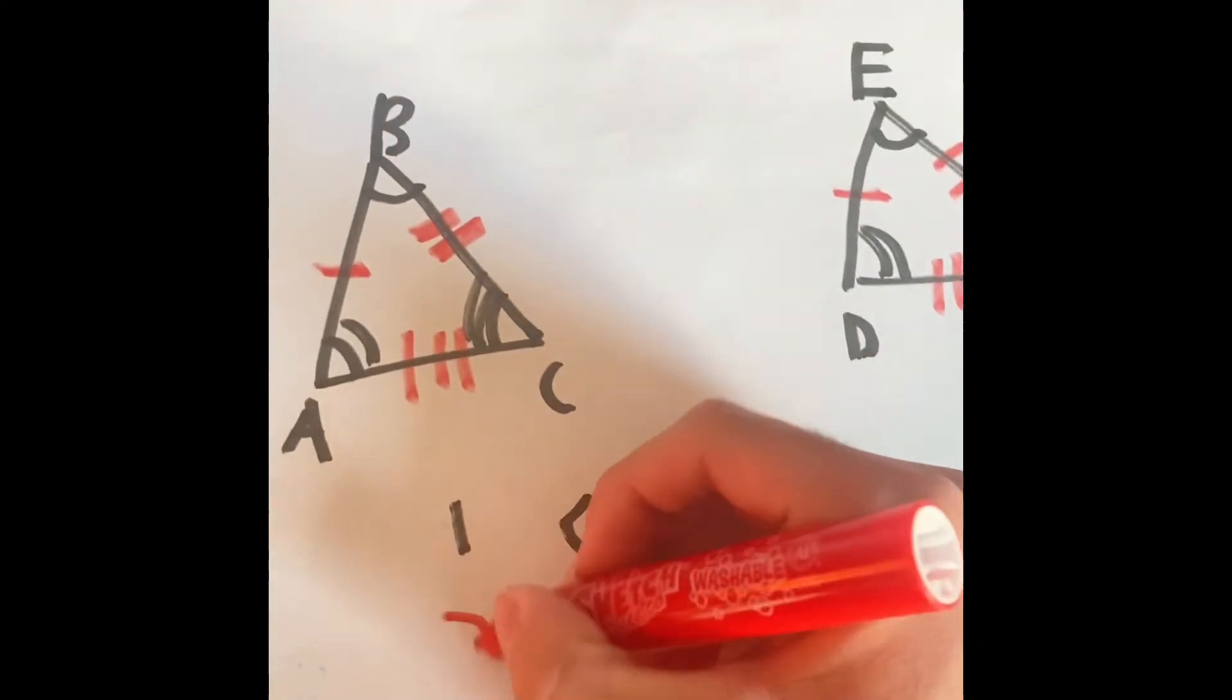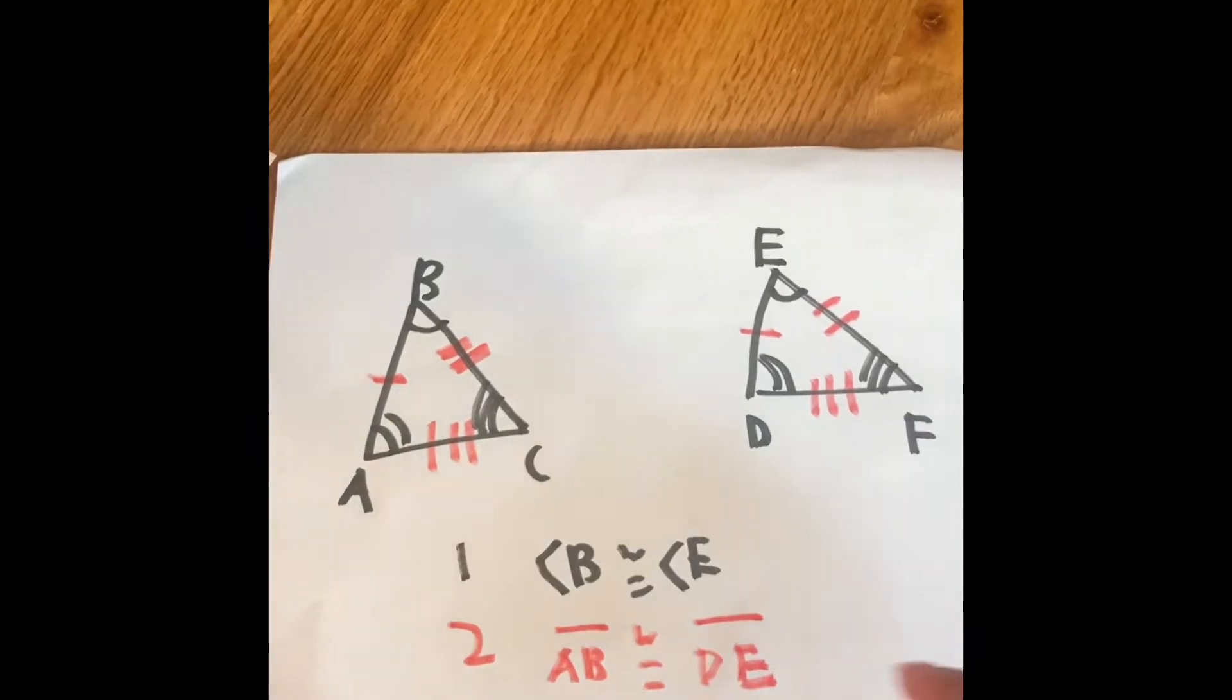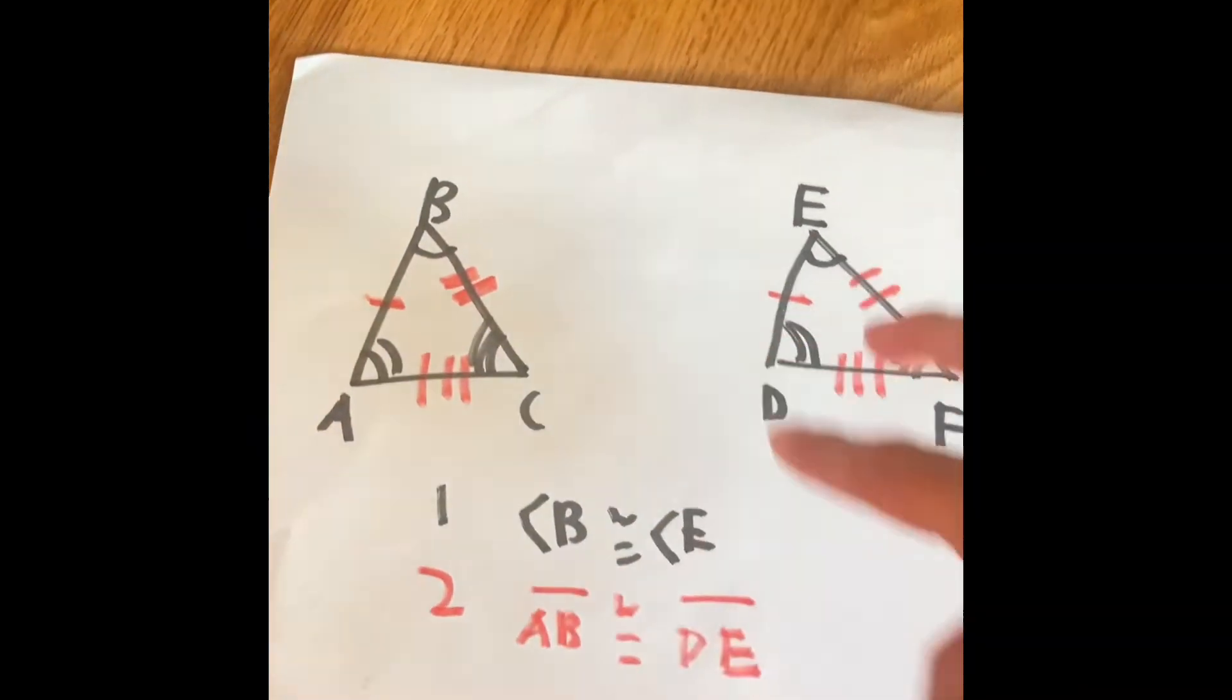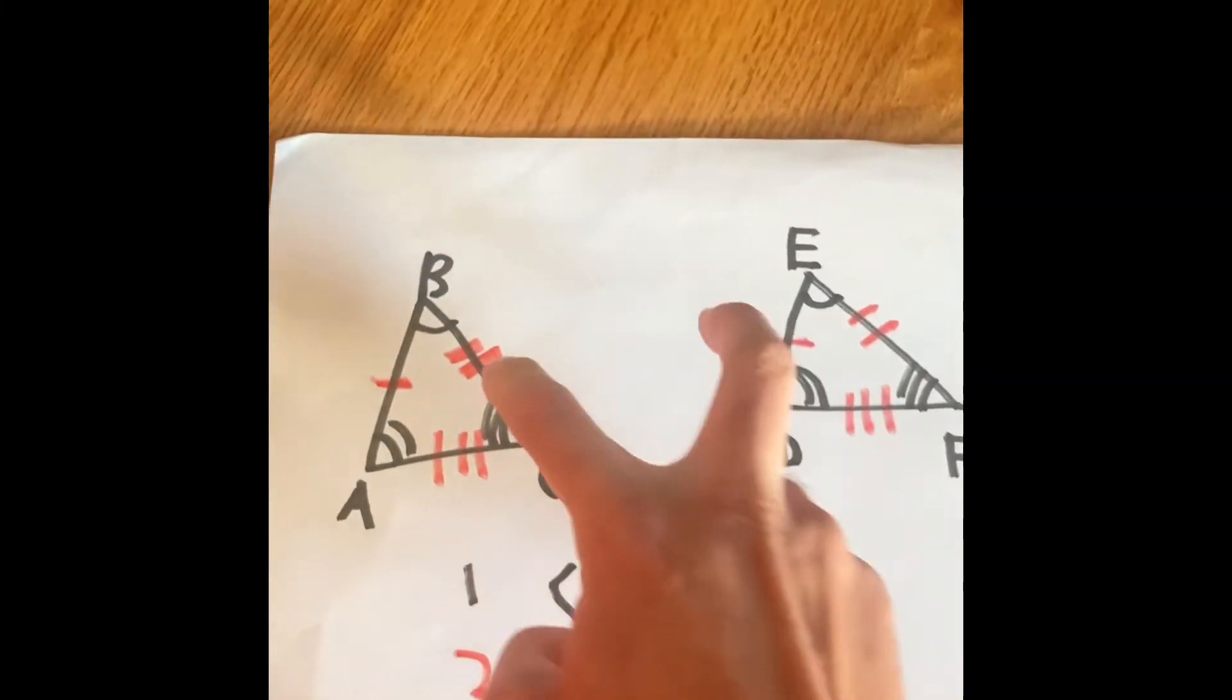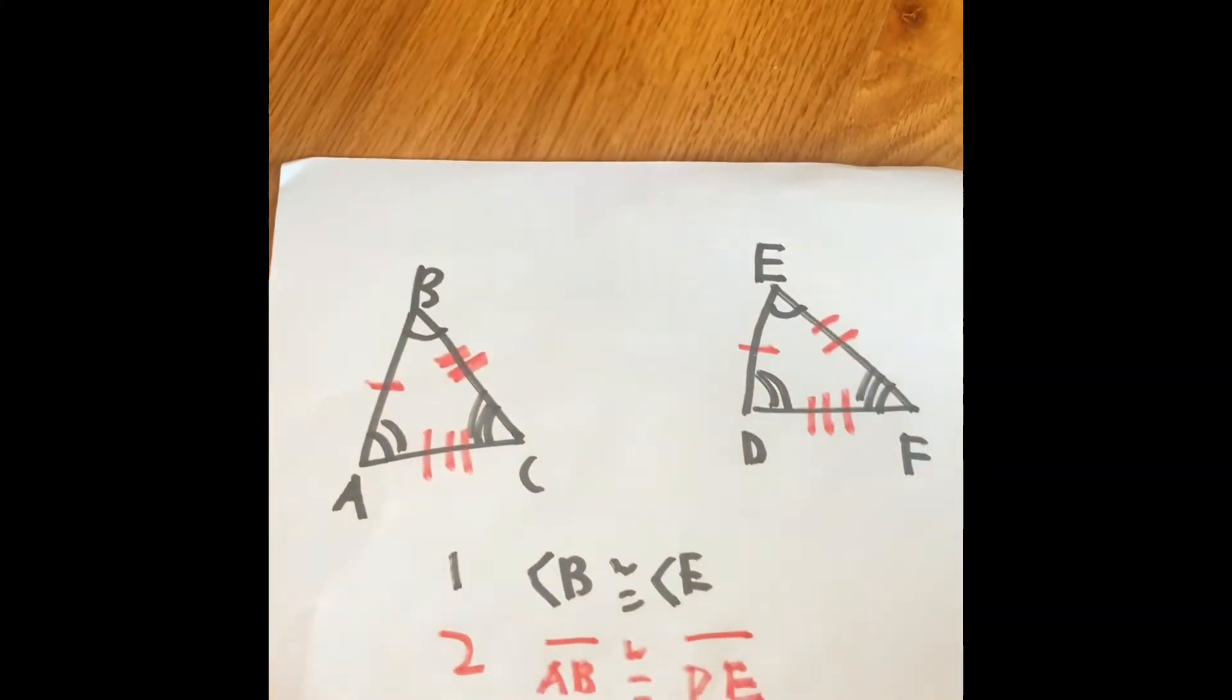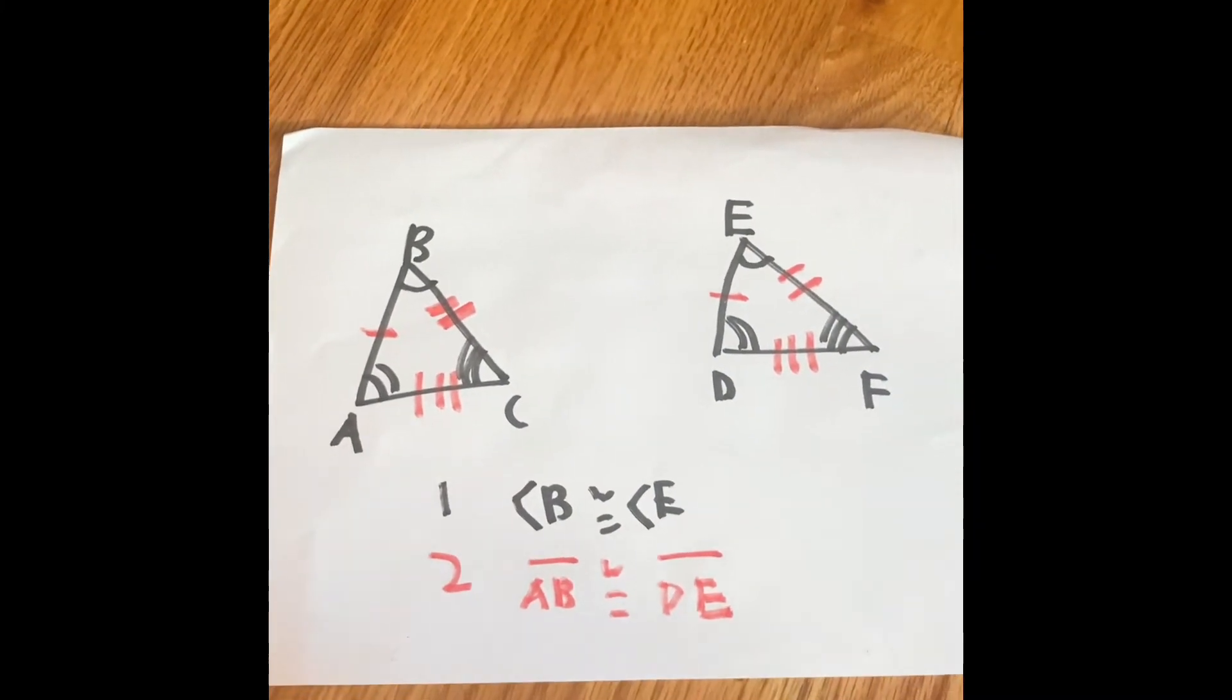That can be reason number two. So these two are congruent, but these are the figures that are proving that these two triangles are congruent. Let's list out some more.